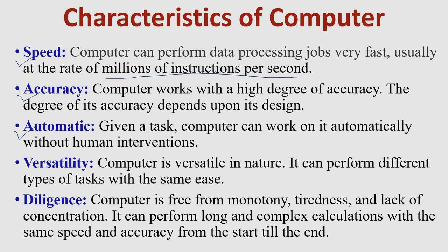The third characteristic is automatic: given a task, a computer can work on it automatically without human intervention. Simply give the task to the computer and it can execute it automatically — we don't have to check whether it has performed the task or not. The fourth is versatility: a computer is very versatile in nature because it can perform different types of tasks with the same speed and accuracy.